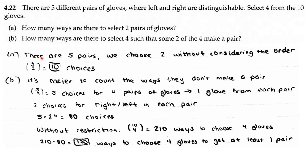For Part A, there are 5 pairs and we have to choose 2 pairs of gloves without considering the order, so we use combinations. 5 choose 2 is equal to 10, so there are 10 ways.